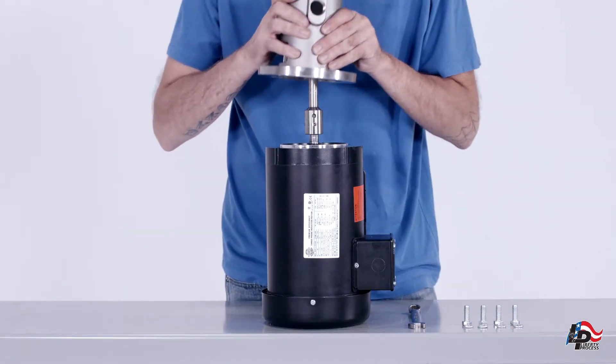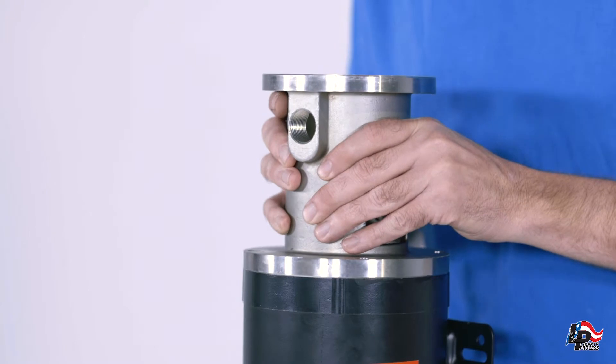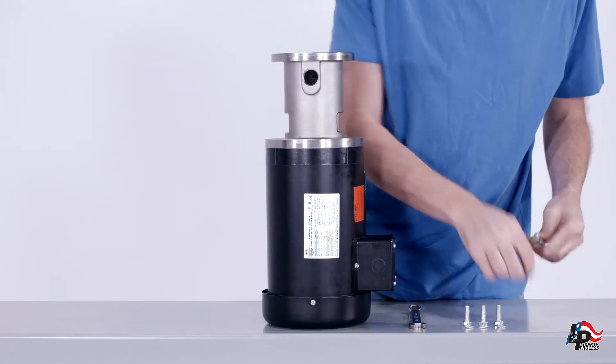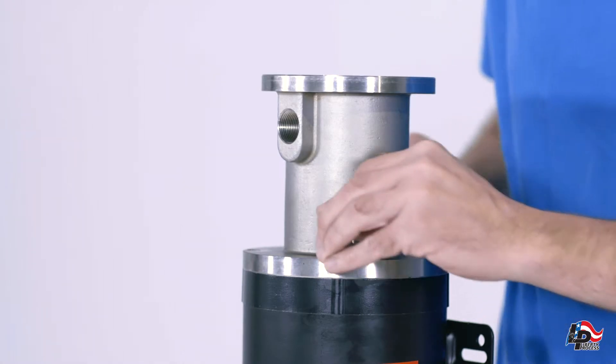Install the discharge casing onto the motor, taking care not to damage the seal on the stub shaft. Tighten the discharge casing onto the motor using the four nine-sixteenth inch bolts.